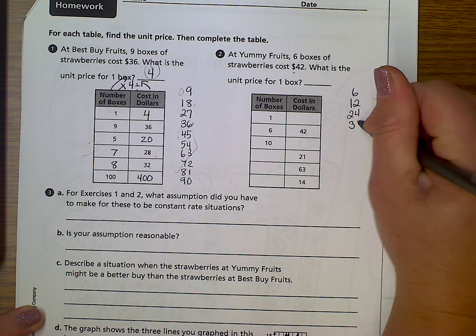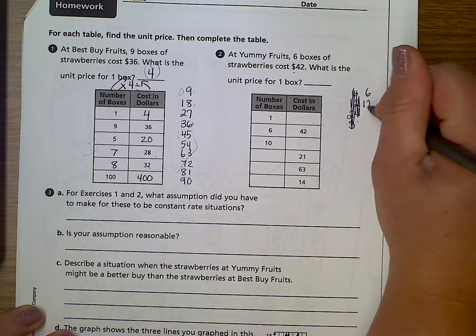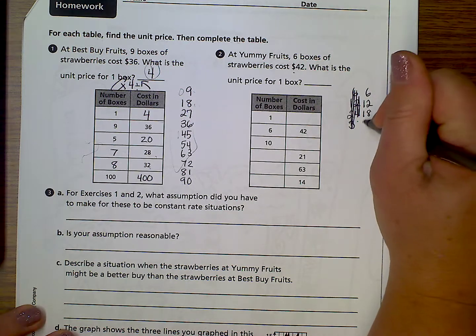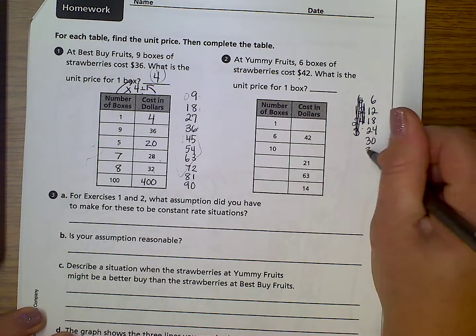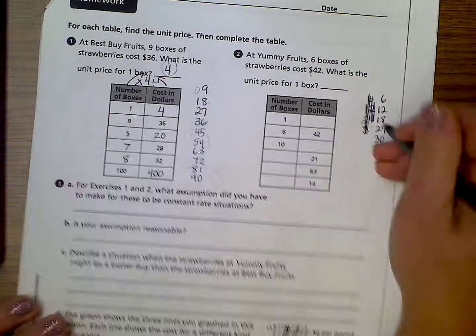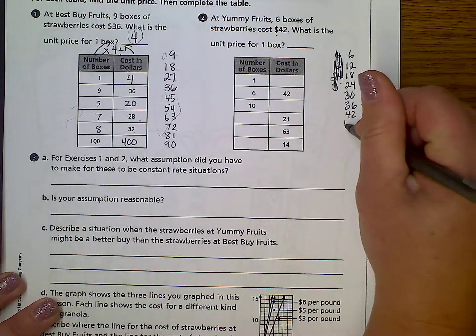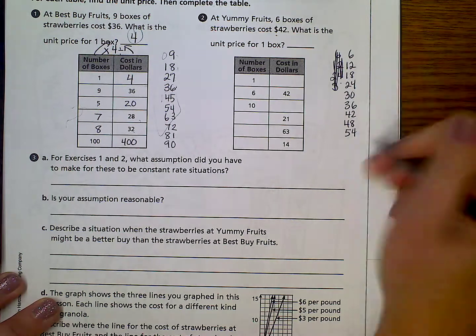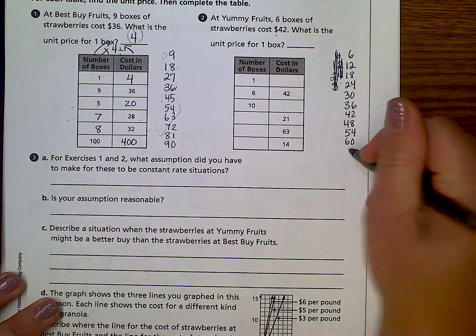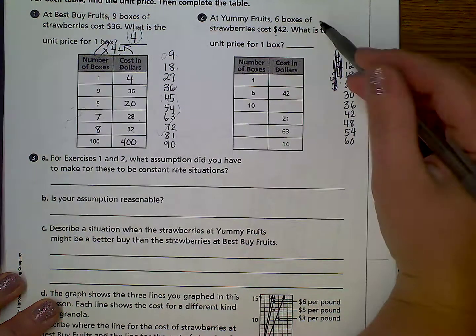30. Or, sorry. I skipped the 18. 6, 12, 18, 24, 30, 36, 42, 48, 54, 60. That's if we're counting by 6s.